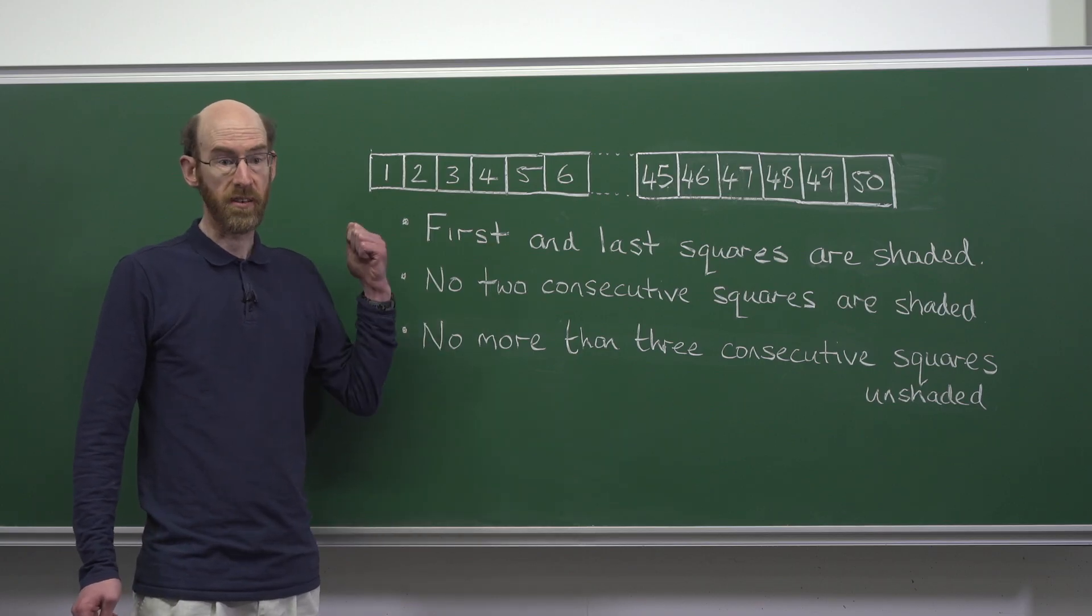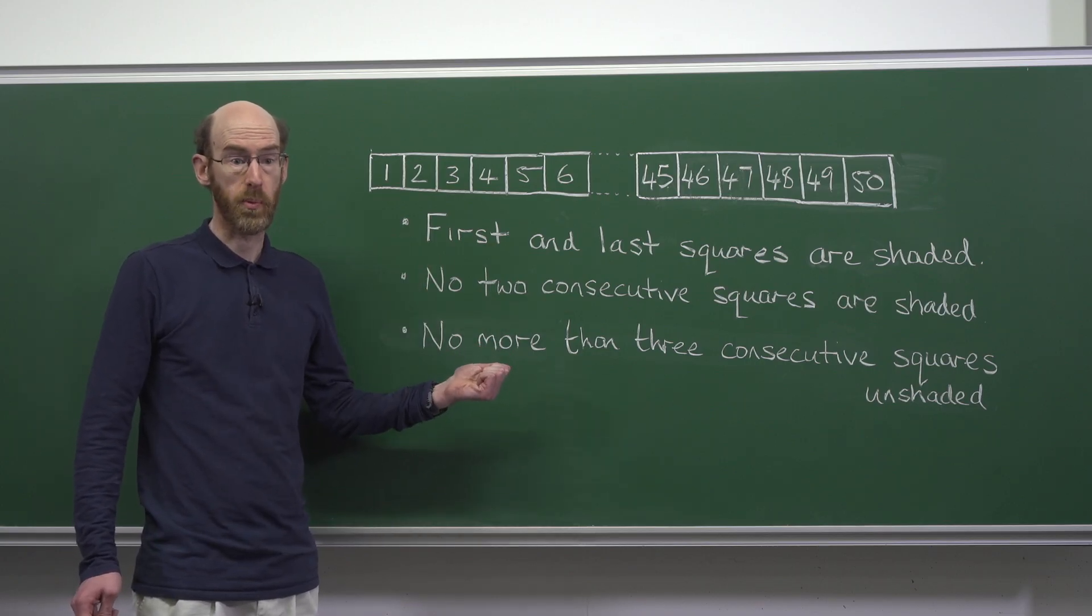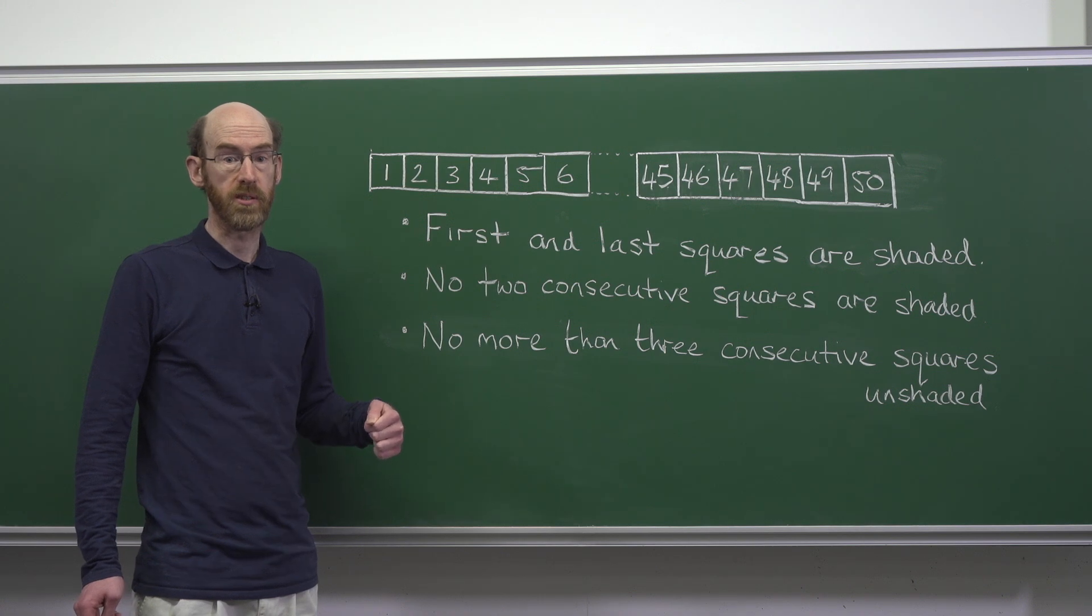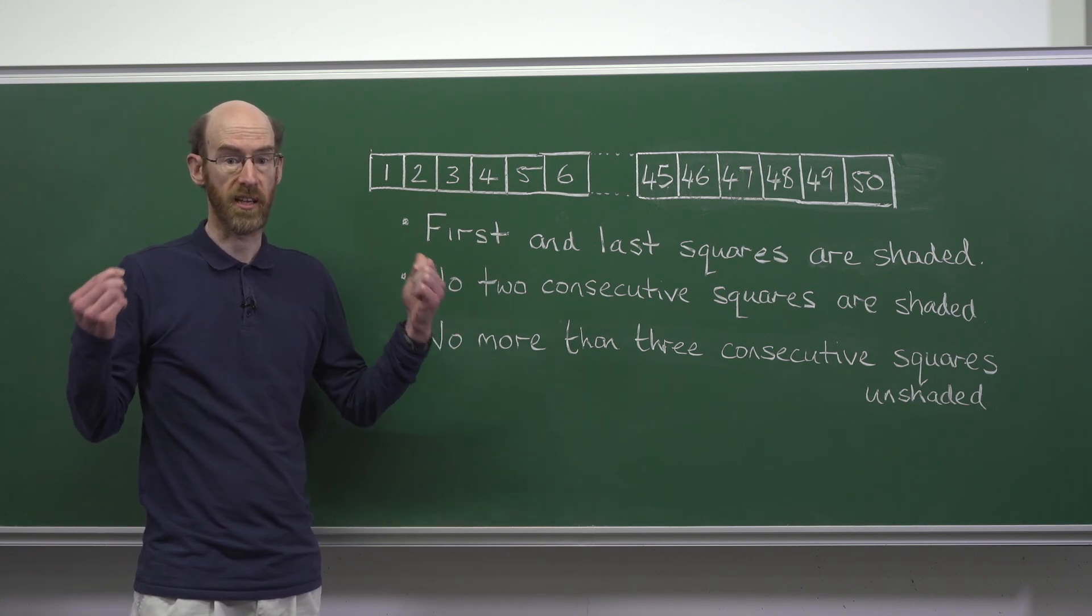Our goal is to find the maximum number of squares we can shade, the minimum number of squares we can shade, and the difference between those two values is our final answer.